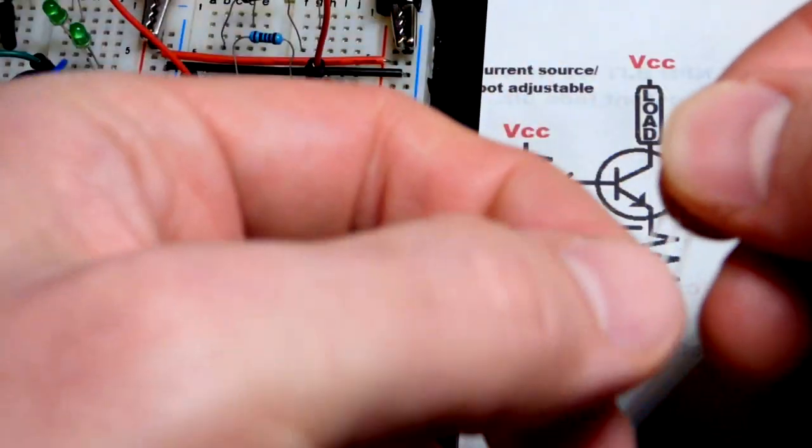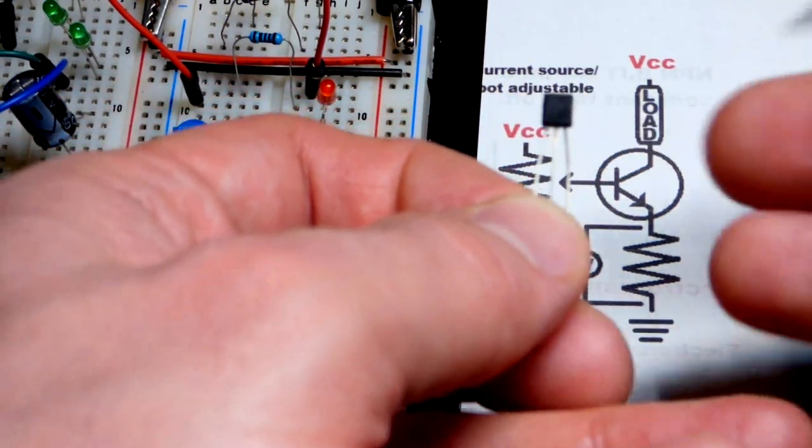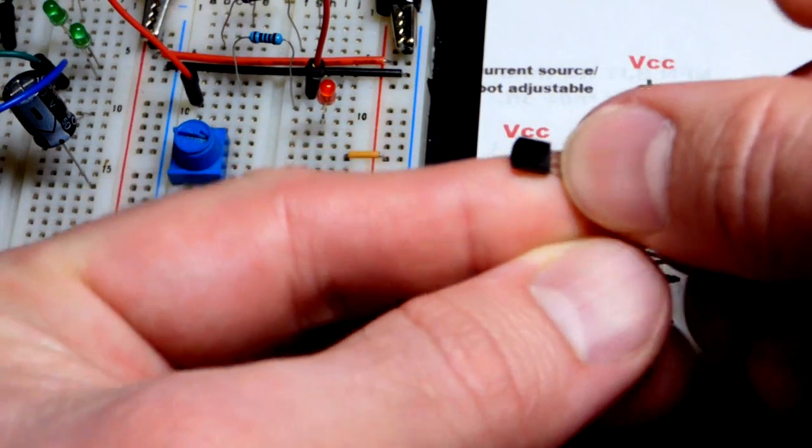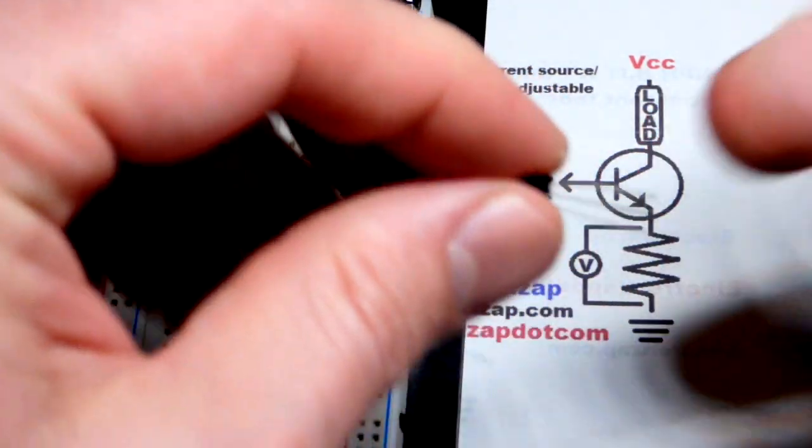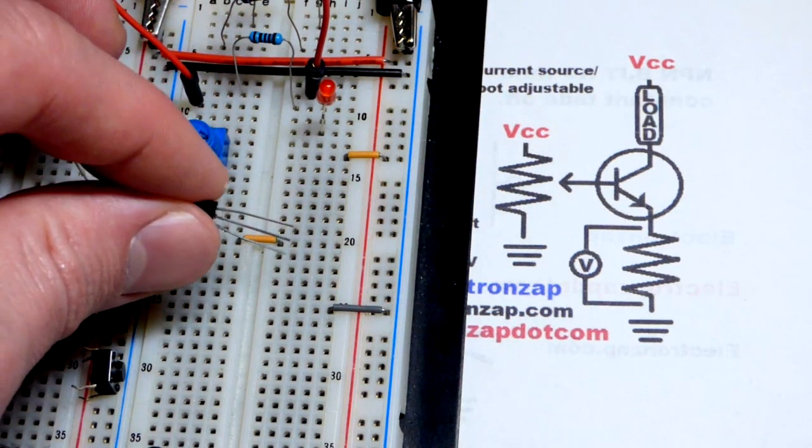We're going to grab the 2N3904 transistor right here. Left pin emitter, middle pin base, right pin collector. If I turn it this way, now the pins line up like you see on the diagram right there.